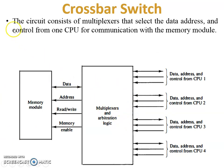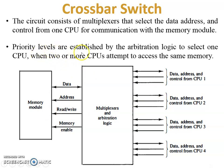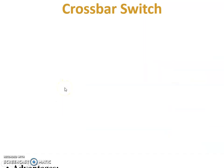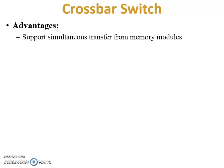The circuit of the crossbar switch consists of multiplexers that select the data, address, and control from one CPU. The data bus is bidirectional, while the address and control bus is unidirectional, from the CPU to the memory module. When more than one CPU requests the multiplexer to access the same memory module, priority levels are established by the arbitration logic to select one CPU. This multiplexer and arbitration logic sits between the memory module and processors.